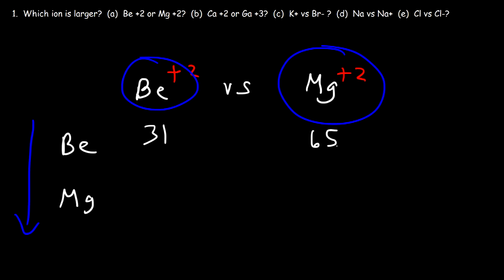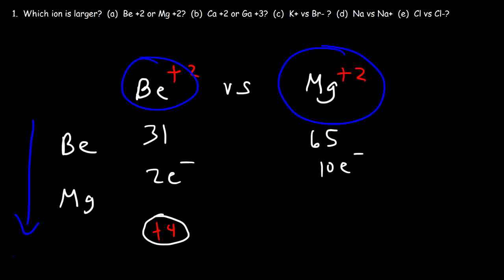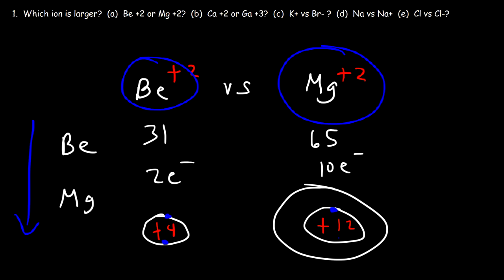Let's understand why. An atom of beryllium has 4 electrons, so the beryllium ion has only 2 electrons. An atom of magnesium has 12 electrons, but the Mg²⁺ ion loses 2, so it has 10 electrons. The beryllium ion has only 1 shell containing 2 electrons, and its nucleus has a charge of plus 4. Magnesium has 12 protons, a nuclear charge of plus 12, and 10 electrons — 2 in the first shell and 8 in the second shell. That's why magnesium is a lot bigger than beryllium: it has 2 energy levels, as opposed to 1.